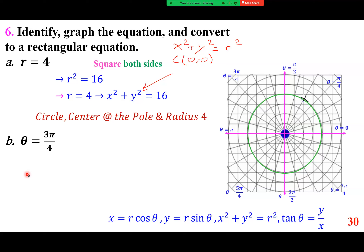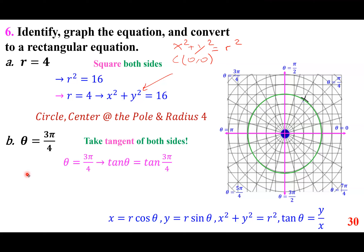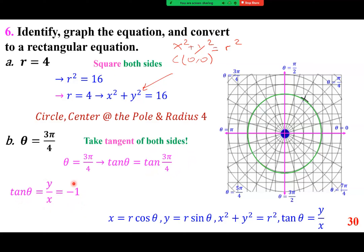For theta equals 3 pi over 4: take the tangent of both sides. Tan of pi over 4 is positive 1, tan of 3 pi over 4 is negative 1. Since tan theta equals y over x, cross multiplication gives y equals negative x — a line through the origin (the pole). y equals x goes one way, y equals negative x goes the other way.